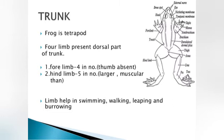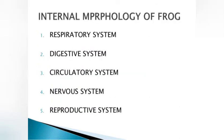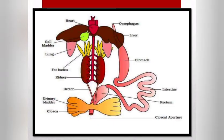The frog is a tetrapod, with four limbs present. The dorsal part of the trunk: forelimbs have four digits and the thumb is absent, while hind limbs have five digits and are large and muscular.